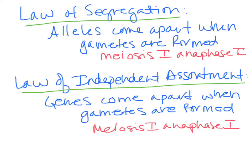The law of segregation shows us that alleles come apart when gametes are formed in meiosis I during anaphase I. This means that big A and little a in a heterozygote come apart — one goes one way and one goes the other way during meiosis.